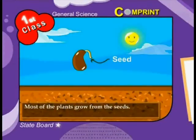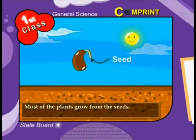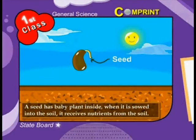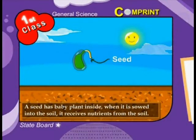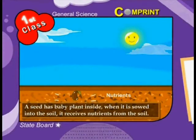Life of a plant. Most of the plants grow from the seeds. A seed has a baby plant inside. When it is sowed into the soil, it receives nutrients from the soil.